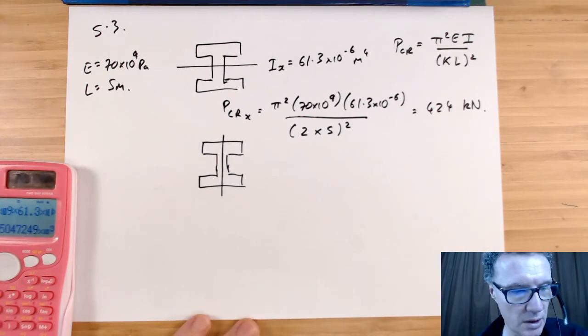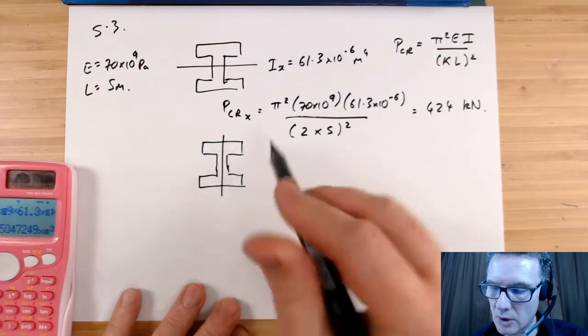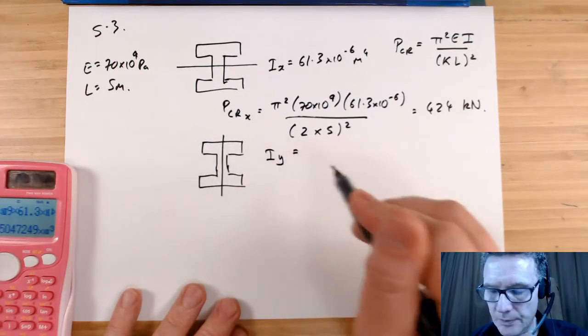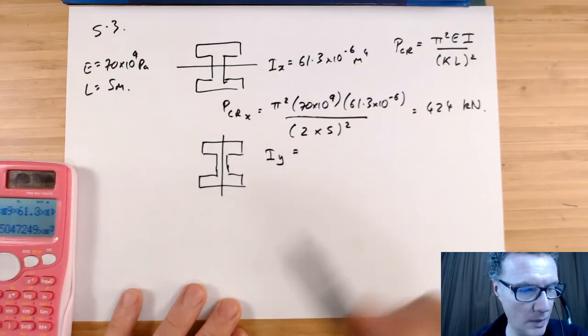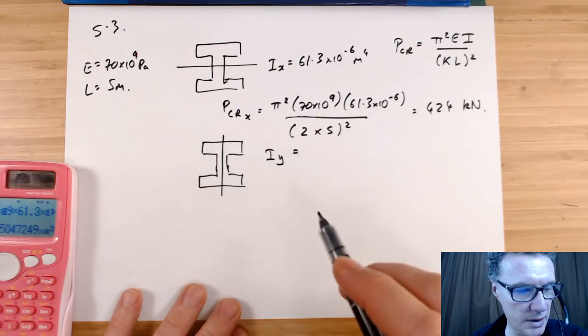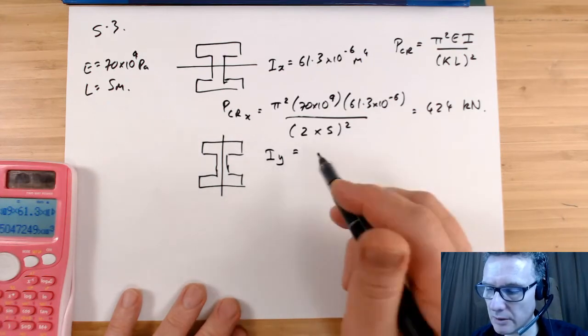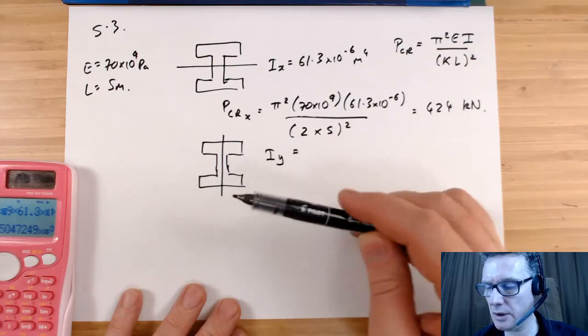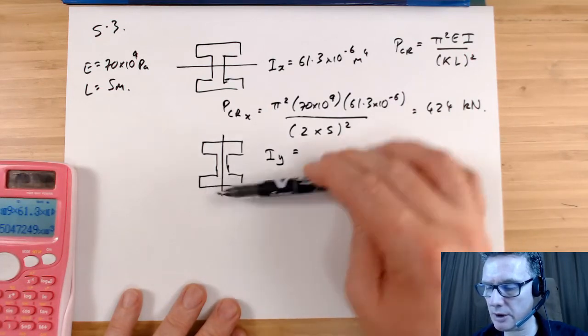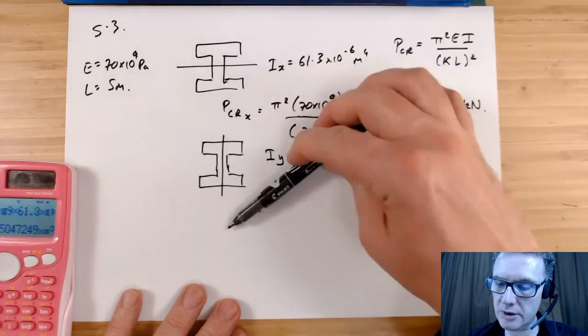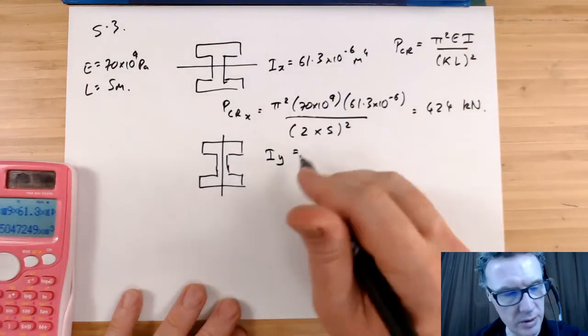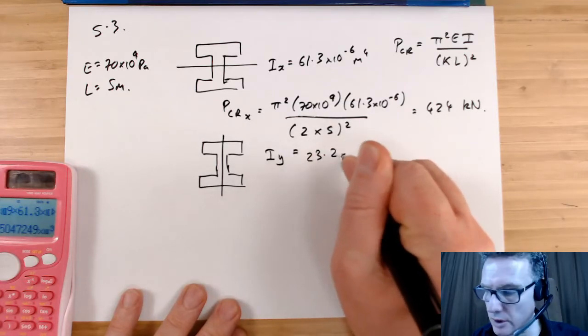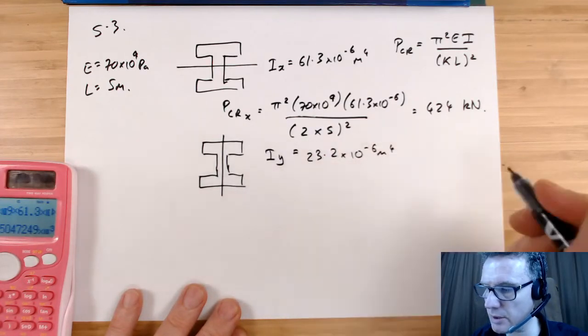So in this case I want to be looking for I of y. And that is going to have a lower value, yes. So I_y, you need to be looking in this direction. Although we're considering it buckling in this direction, that's what's a bit confusing. So we've got 23.2 times 10 to the minus 6 meters to the power 4.